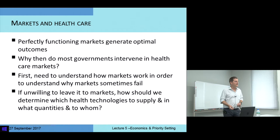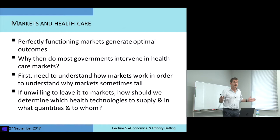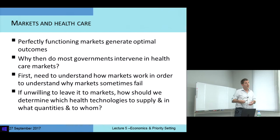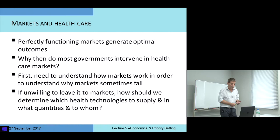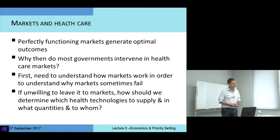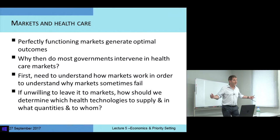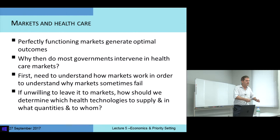It's probably all governments, to some extent, that intervene in the markets for healthcare. Sometimes they completely replace the market. Sometimes they allow a private market to co-exist alongside a very regulated provision of healthcare. In order to understand this, we have to understand why markets might fail — why markets might fail to give us good outcomes. Because if we were pretty convinced the market would work, why bother intervening? Why go to all the effort of having large ministries of health and welfare? Why not just leave it to the market?